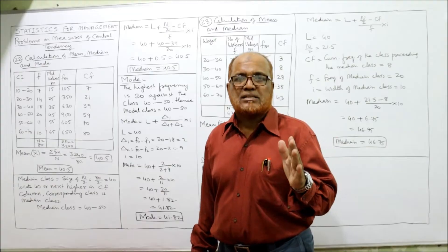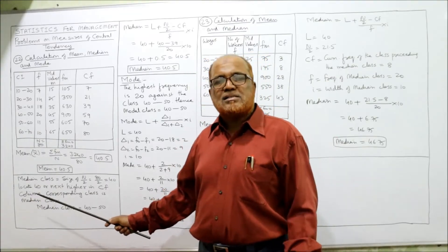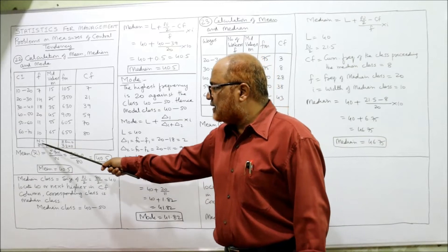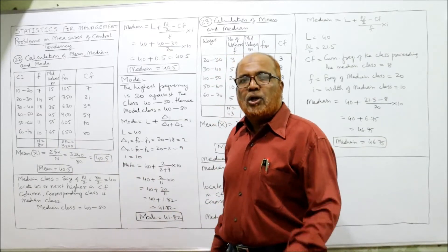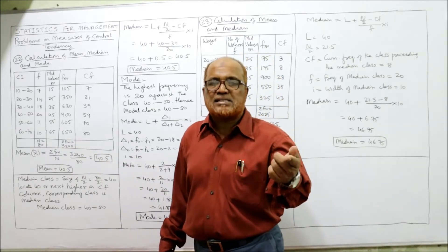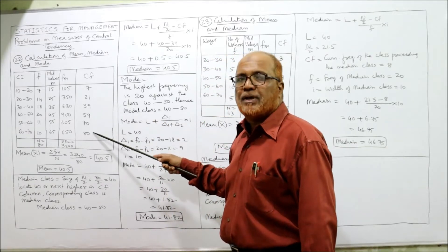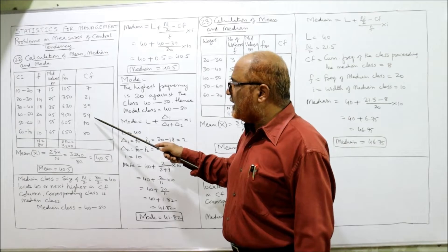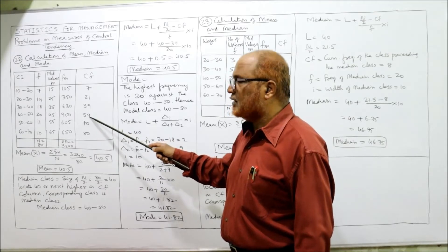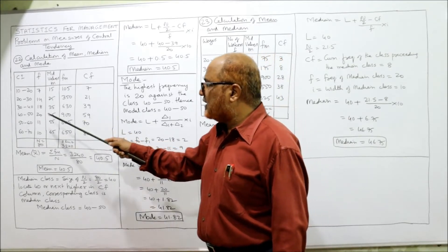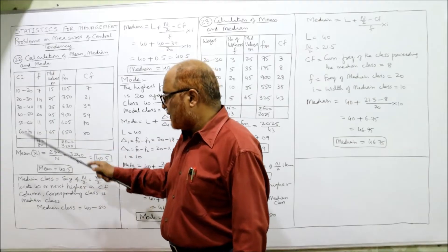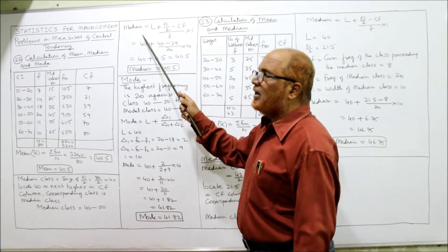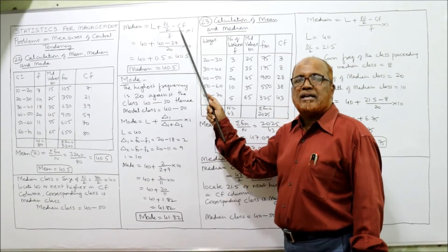For the median, first we calculate the median class. Median class = size of n/2 = 80/2 = 40. Locate 40 or the next higher value in the cf column. The next value higher than 40 is 59, and the class corresponding to cf = 59 is 40–50. So the median class is 40–50.